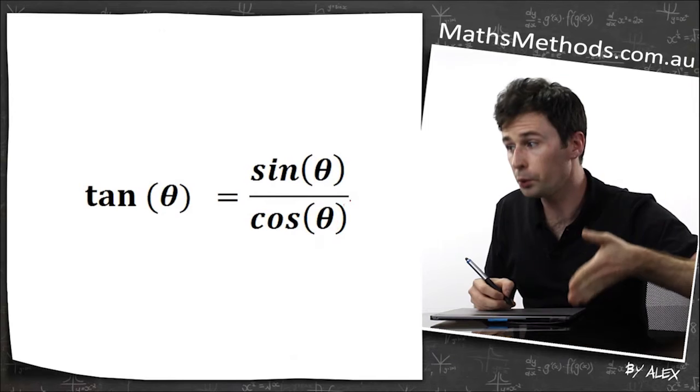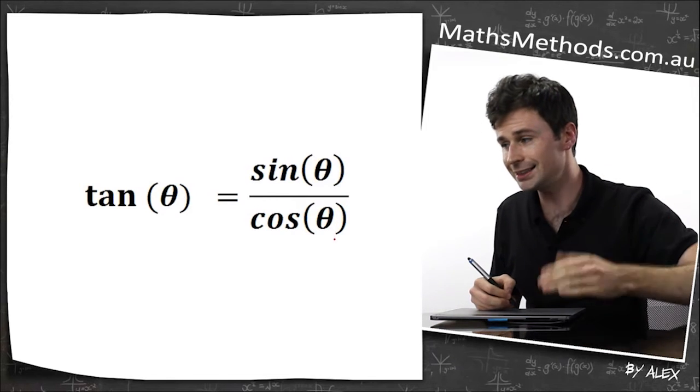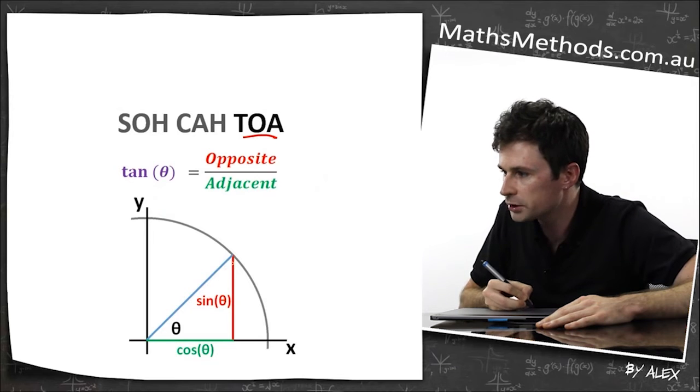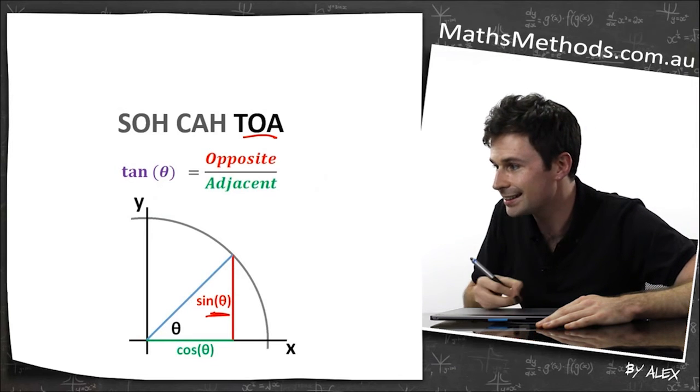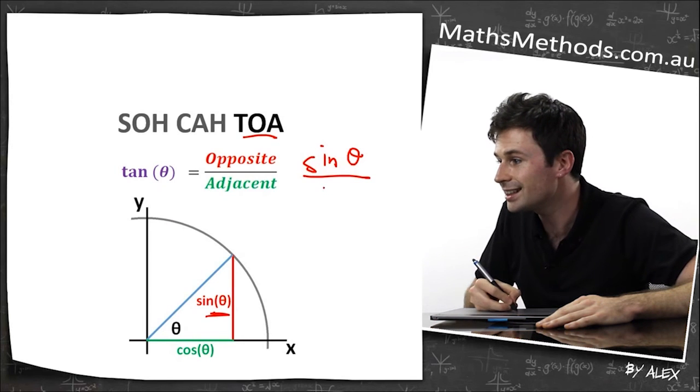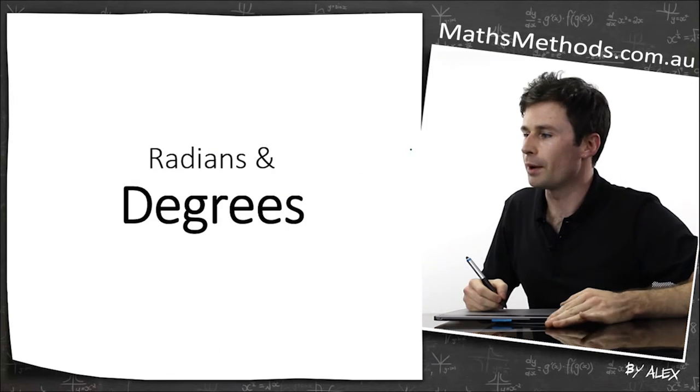Tan also equals sine theta divided by cos theta. Tan equals opposite divided by adjacent. Here's the line opposite, which is the red line, which is sine theta, divided by the adjacent line, which in this case is cos theta.